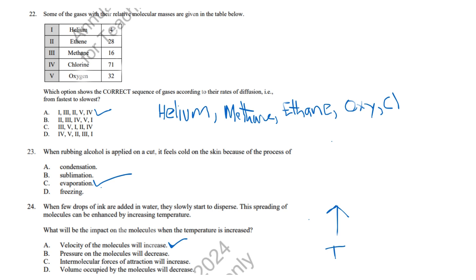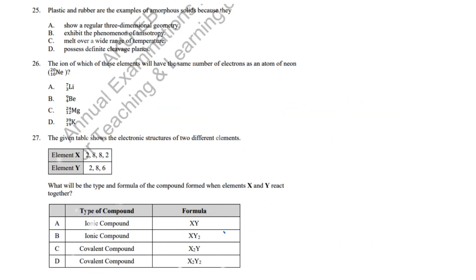Question 24: Increasing temperature increases the velocity of molecules. Correct answer: A, Velocity of the molecules will increase. Question 25: Amorphous solids melt over a temperature range, unlike crystalline solids. Correct answer: C, Melt over a wide range of temperature.